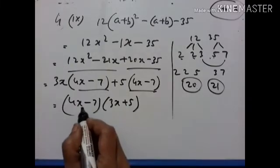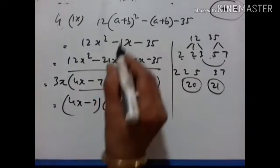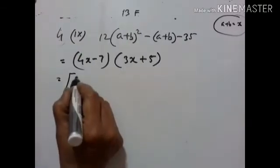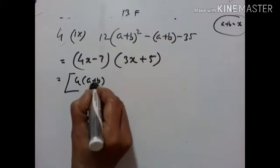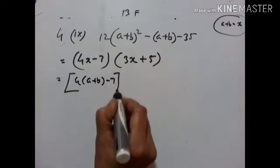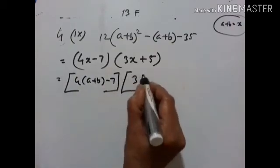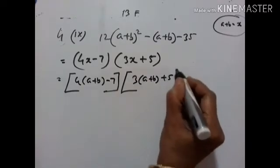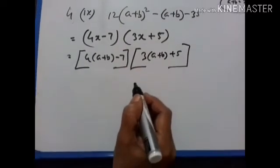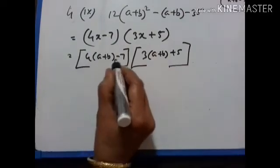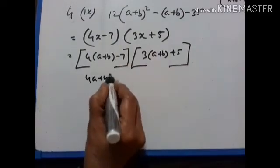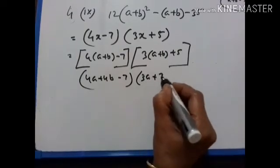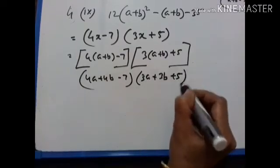Now we have to substitute X with A plus B, giving 4 into A plus B minus 7, and 3 into A plus B plus 5.